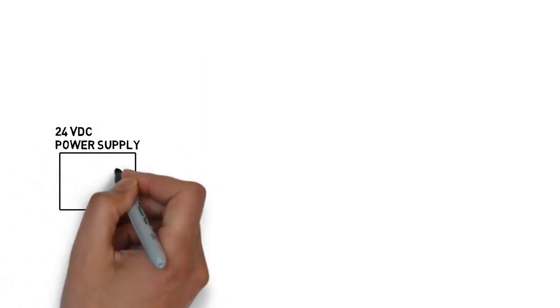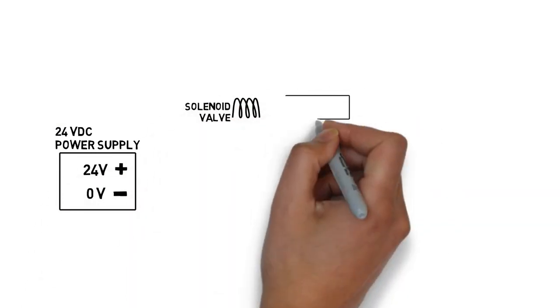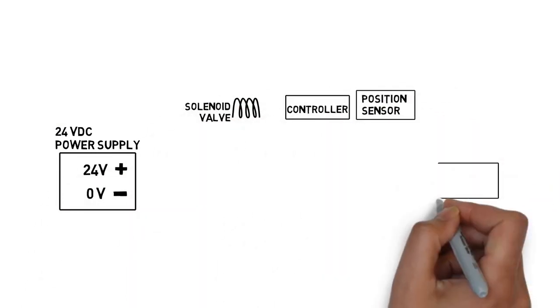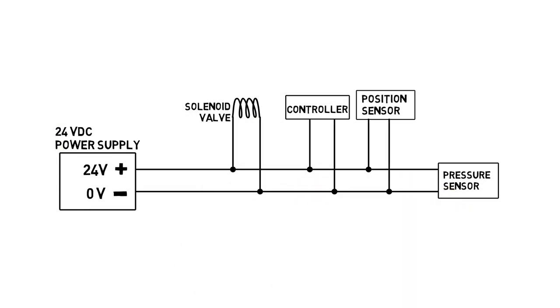Consider this common wiring scheme. A 24 volt power supply feeds a solenoid valve, a motion controller, a position sensor, and a pressure sensor.